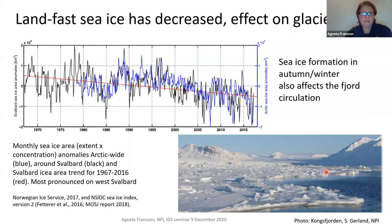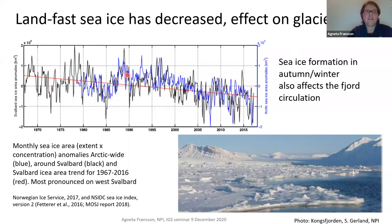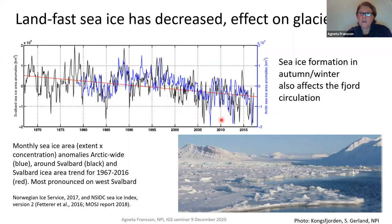The diagram from 1967 to 2015 illustrates that Svalbard sea ice extent has a decreasing trend. The black shows monthly sea ice area anomalies, the blue is Arctic sea ice extent, and the red is the trend for Svalbard sea ice — a clearly decreasing trend. Sea ice formation is also important in autumn and winter because brine from sea ice forms dense water, which causes mixing and vertical circulation in the fjord.